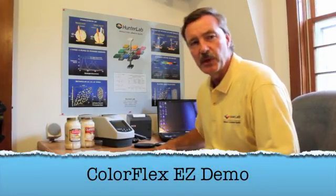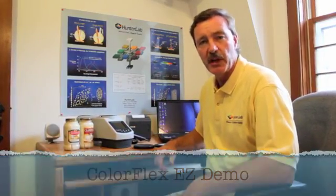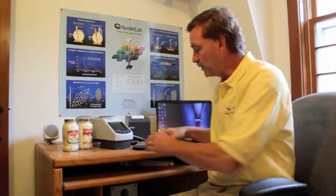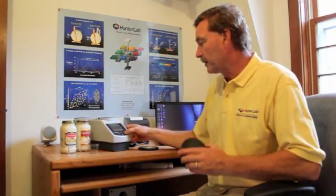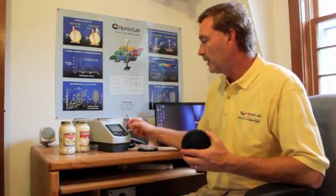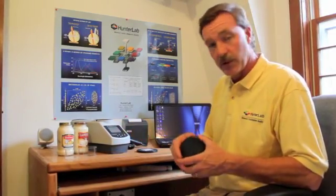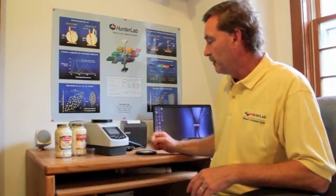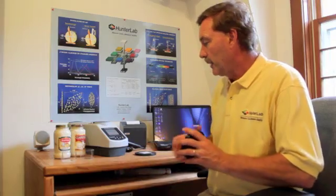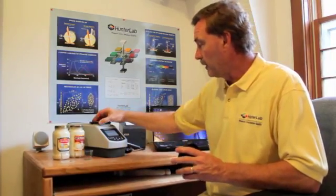Before taking color measurements with the ColorFlex, we must first standardize the instrument. We do this with two tiles, both a black and a white tile. The sequence is simple. We push the key labeled standardize, and it prompts us to take a reading with the black glass. We now are prompted to measure the white tile, and the display states the sensor has been successfully standardized.